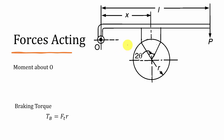Now coming to the forces on the single shoe brake. When the brake is applied there is friction between the brake shoe and the brake drum. Whenever there is friction there will be two forces: one is a normal reaction Rn, acting perpendicular to the frictional surface. Another force will be acting in the direction of rotation — if the drum rotates clockwise, the tangential force Ft will be acting towards the right side; if anti-clockwise, towards the left side.